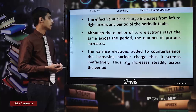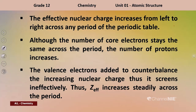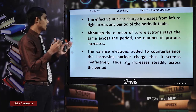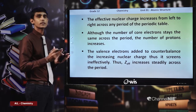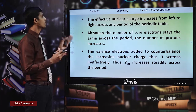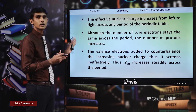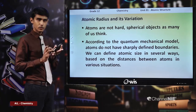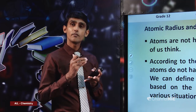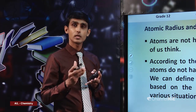The valence shell electrons added when moving across the period are added to the last energy level, so they do not contribute effectively to the shielding effect. That is why effective nuclear charge increases steadily across the period. You can now understand what effective nuclear charge is and how it varies across the period of main group elements.